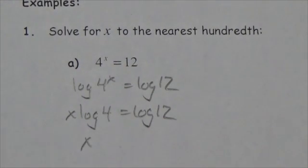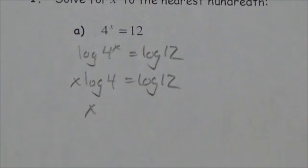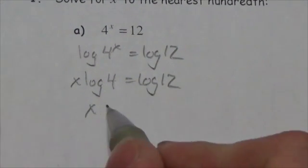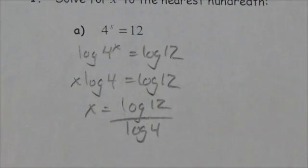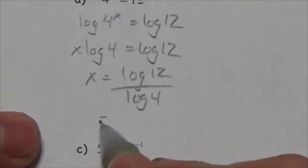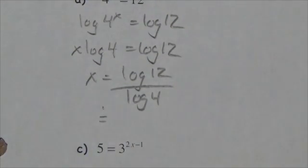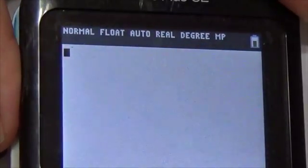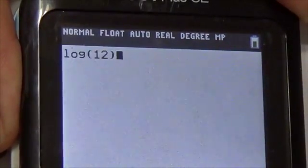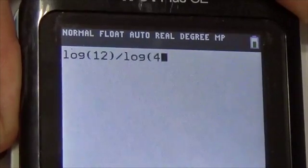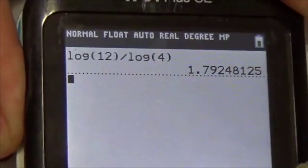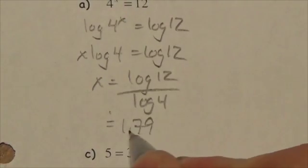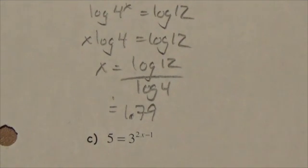Remember, log of 4 is just going to be a number, so I can solve for x by simply dividing both sides by the log of 4. Then I go to my calculator: log of 12 divided by log of 4. Enter that in exactly the way I see it, and I get approximately 1.79. This question wanted us to go to the nearest hundredth, so x is approximately equal to 1.79.